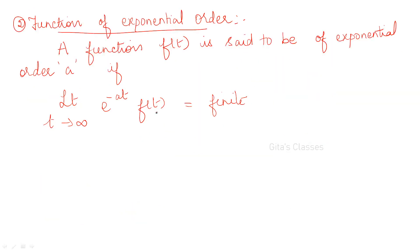Another definition is exponential order. A function f of t is said to be of exponential order if it satisfies the condition: limit as t tends to infinity of e power minus at times f of t, if this limit is a finite value. If this limit is finite, then we can say that f of t is of exponential order.